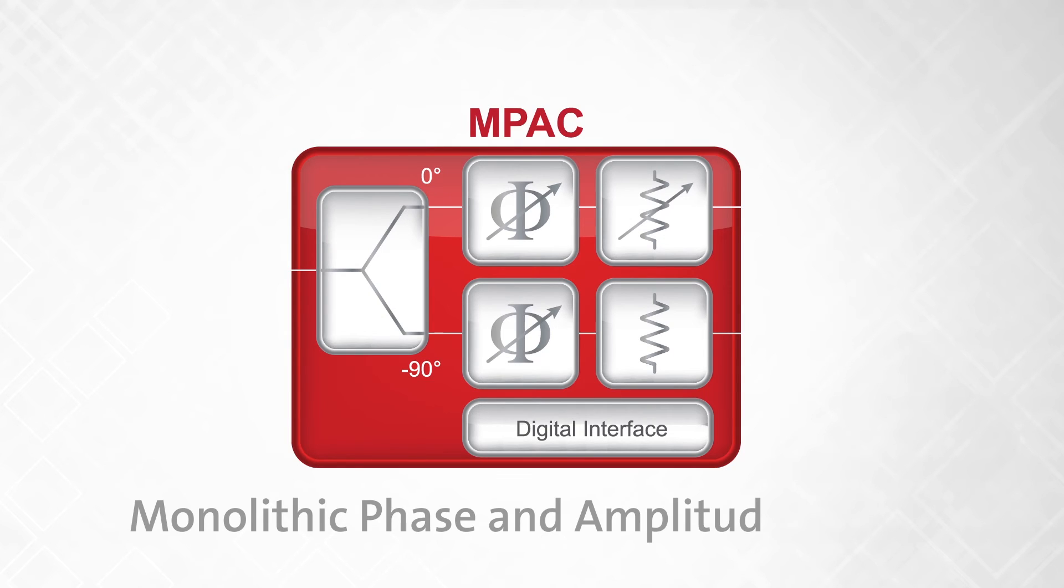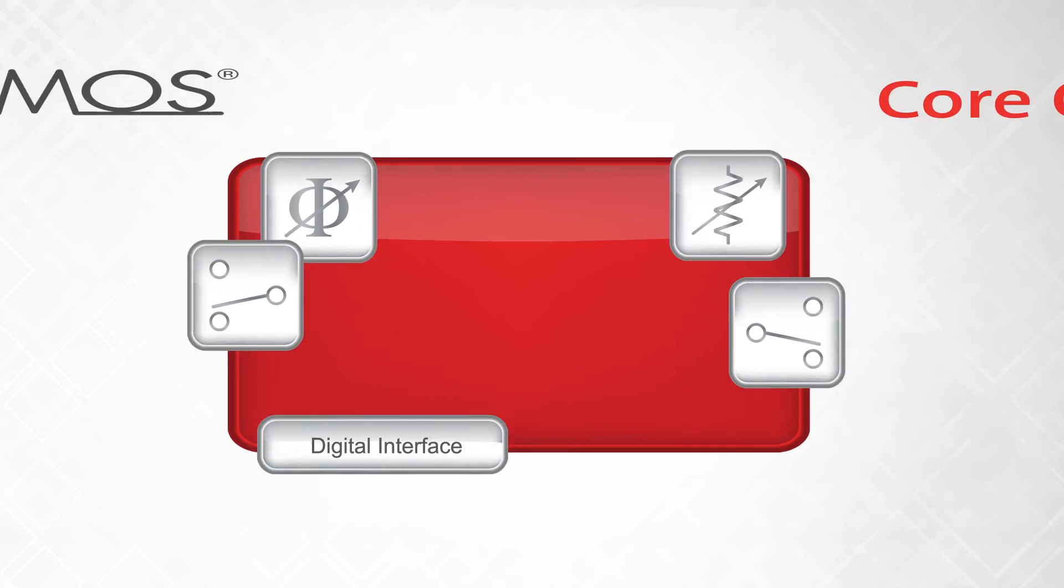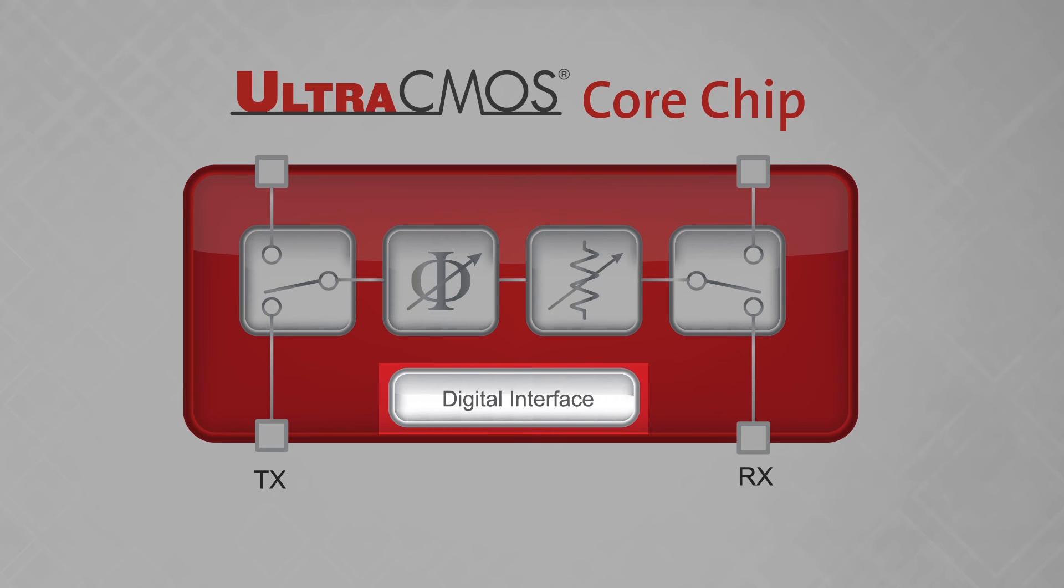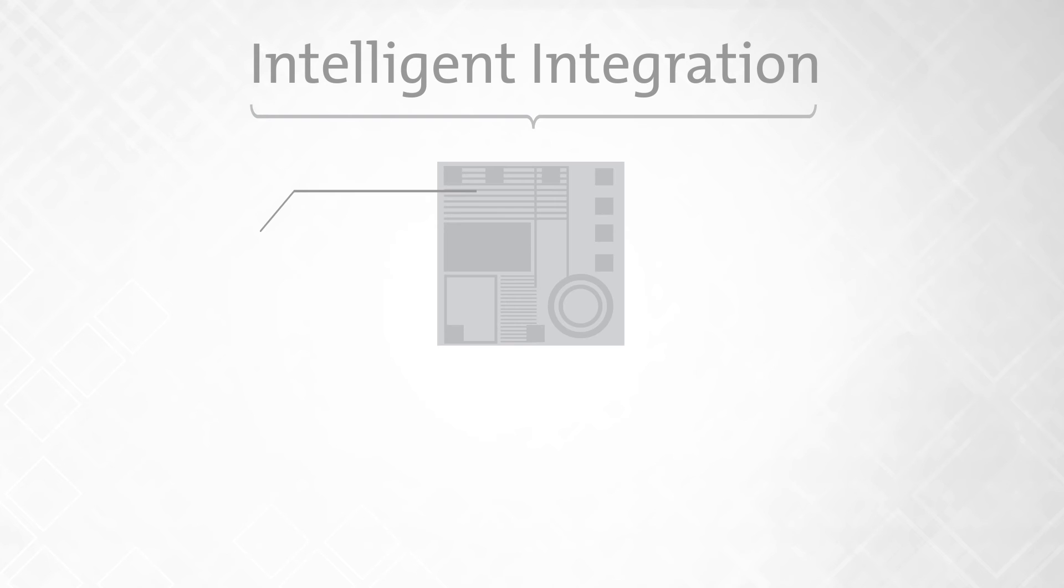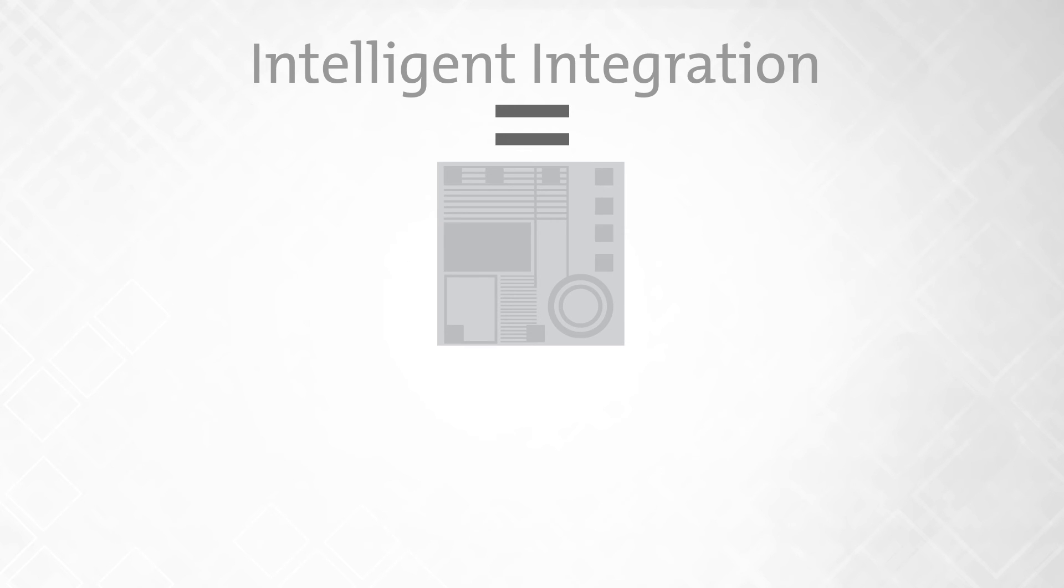We've leveraged the success of the integrated phase and amplitude control of our impact products to start developing core chips that can utilize integrated digital capability to give the flexibility needed to tune gain and phase at fine resolution. Ideal for high-density compact arrays such as the ones being developed for 5G, the Ultra-CMOS core chip uses intelligent integration to provide a flexible analog processing solution with digital programmability that works seamlessly together on a single, monolithic chip.